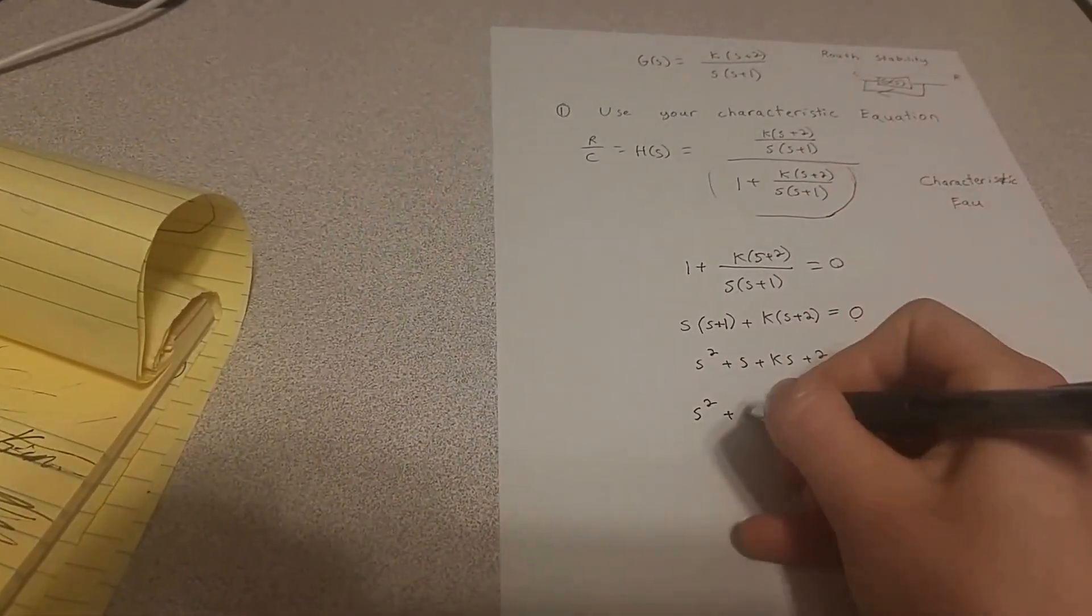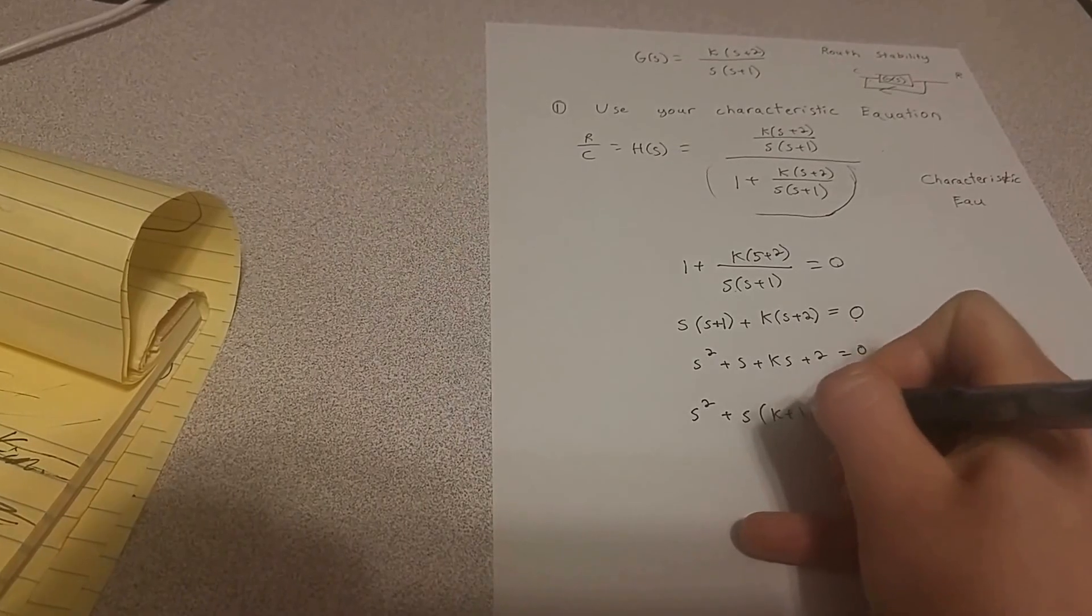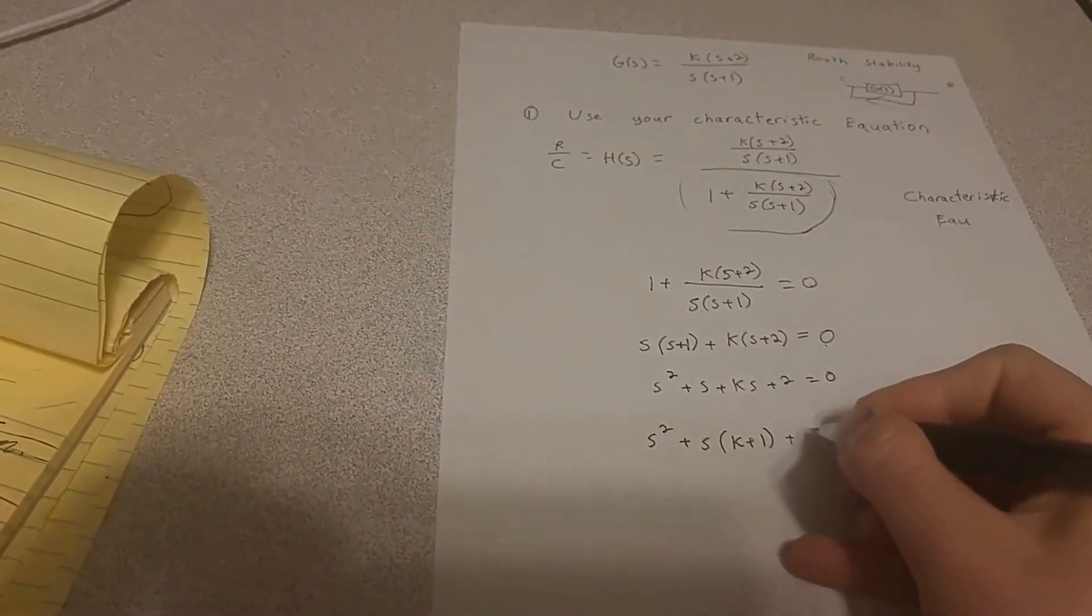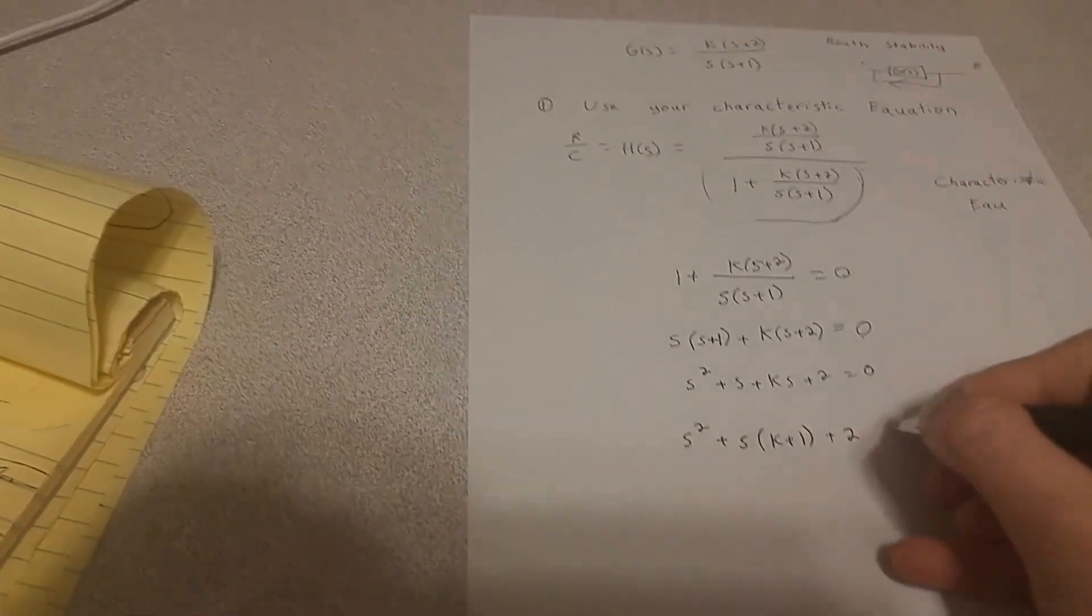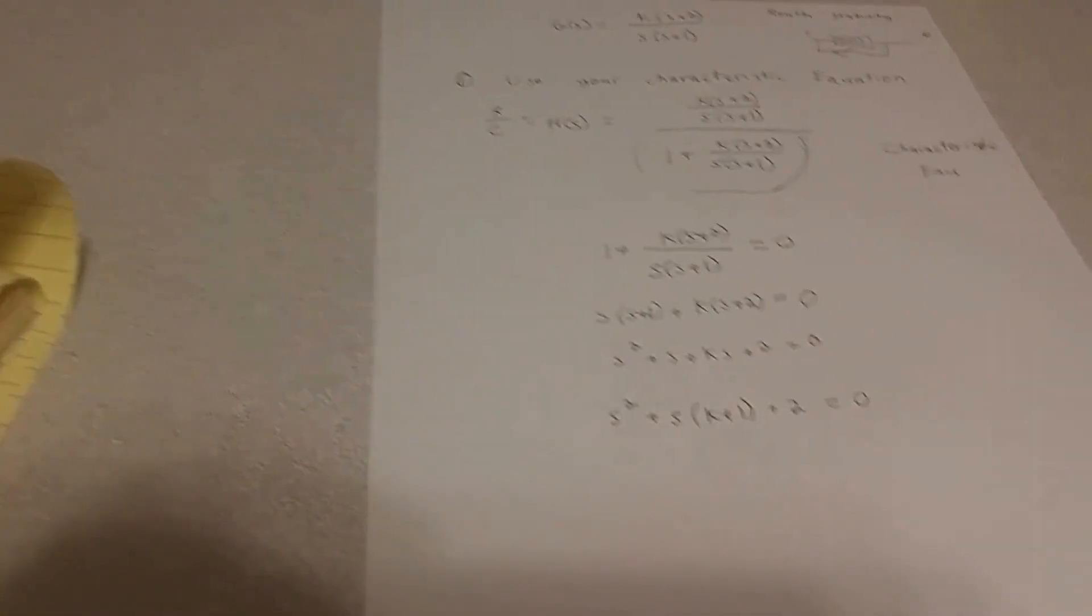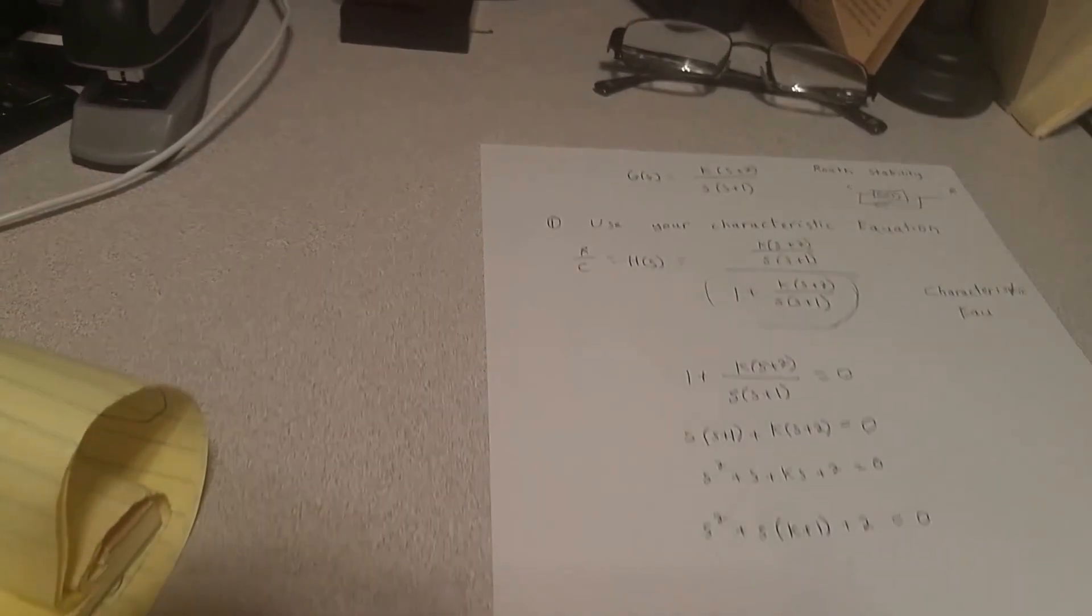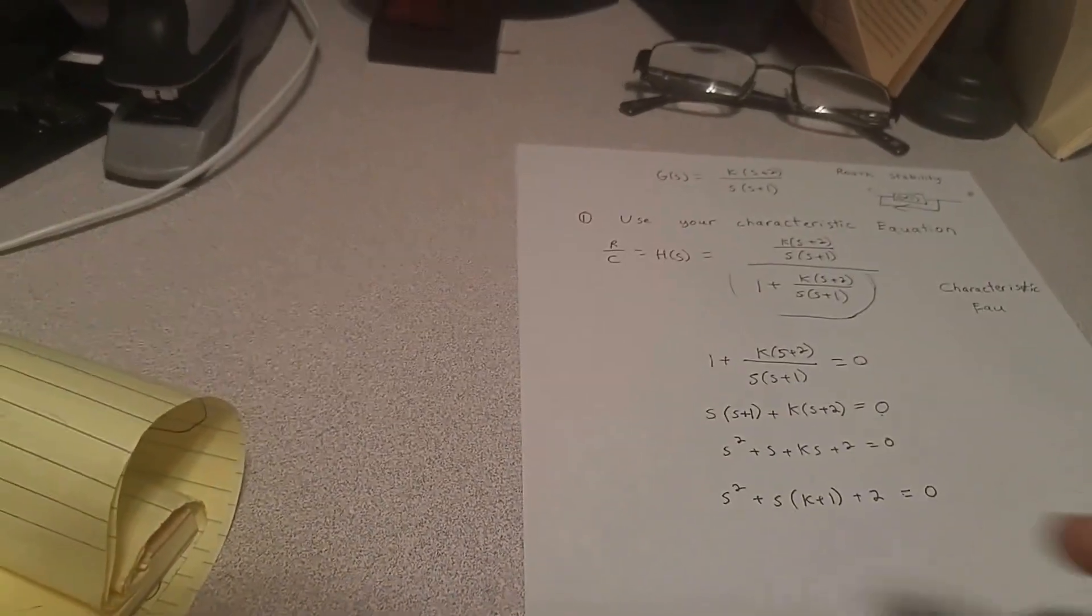S squared plus s times k plus 1. Sorry about that. It equals 0. So these are my s squared, s, and s to the 0 values.